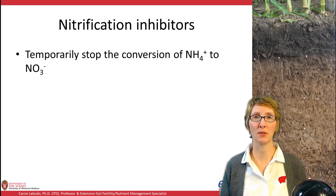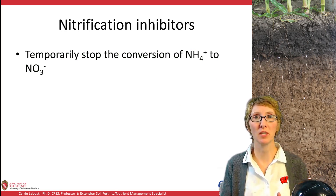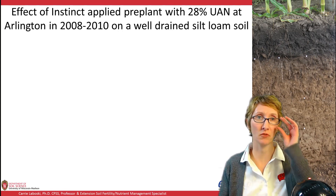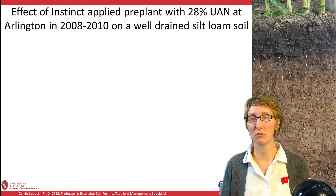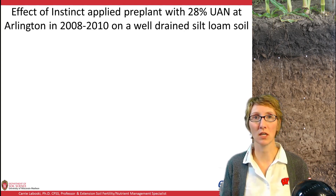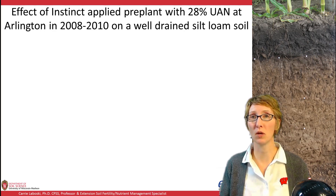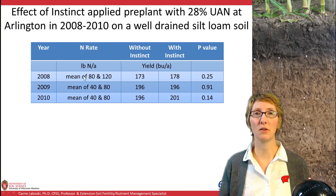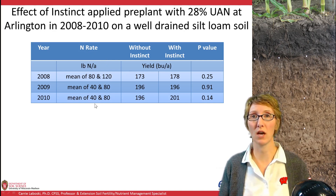Moving on to nitrification inhibitors — what's happening here is we're temporarily stopping the conversion of ammonium to nitrate. I'm going to show research plots from the past few years looking at Instinct, the encapsulated form of nitropyrin. This particular study at Arlington was conducted from 2008 to 2010 on a well-drained silt loam, using UAN as the nitrogen source with the previous crop being soybean.